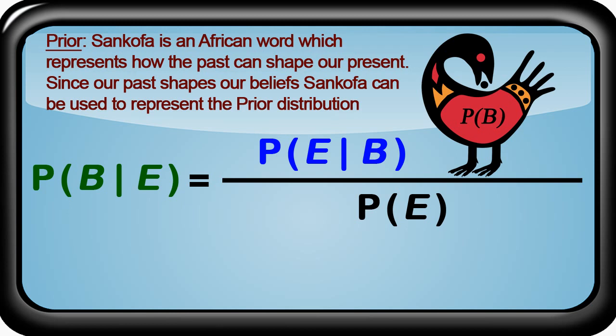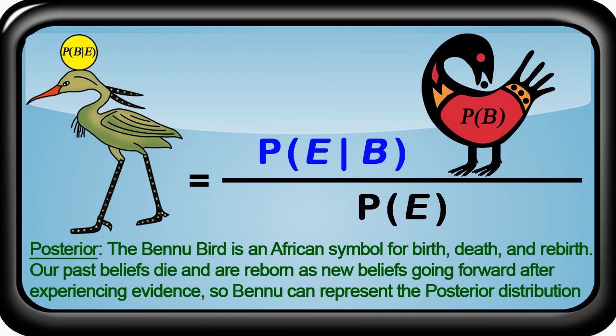In the Akan culture in West Africa, Sankofa is a word and an Adinkra symbol which represents how the past can shape our present. Since our past experiences are what shape our present beliefs and our predictions about the world, the symbol of Sankofa can be used to represent the prior distribution in Bayes' Theorem. After encountering new information, new knowledge, new data, and new experiences, our past beliefs may be altered and die, and are reborn as our newly informed beliefs going forward. As our beliefs are constantly updated with new information, yesterday's posterior becomes today's prior, and today's posterior becomes tomorrow's prior.